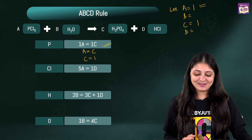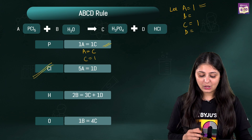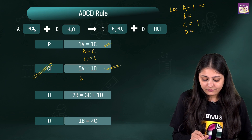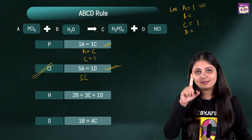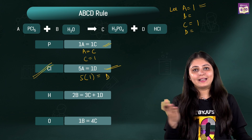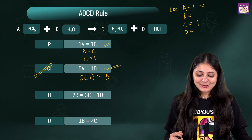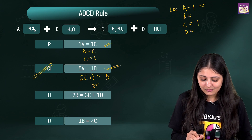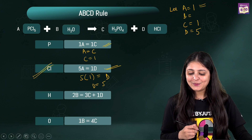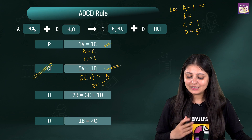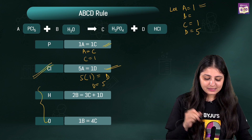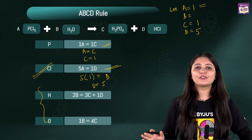From equation 2: 5A = 1D. Since A = 1, we get 5 × 1 = D, so D = 5. Now we know A, C, and D. We still need B, and we have two equations left to solve for it.